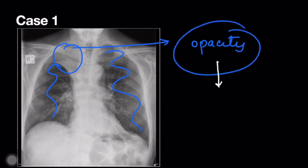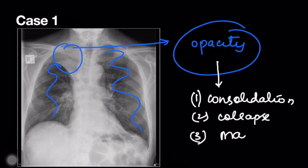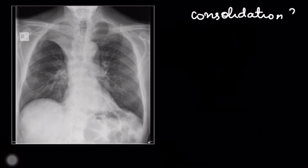Now we shall see what conditions produce opacity. It can be consolidation, it can be collapse, or it can be a mass or nodule. Let's take them one by one. First, about consolidation — so does this picture really fit into consolidation?